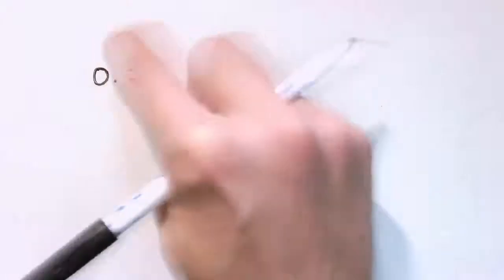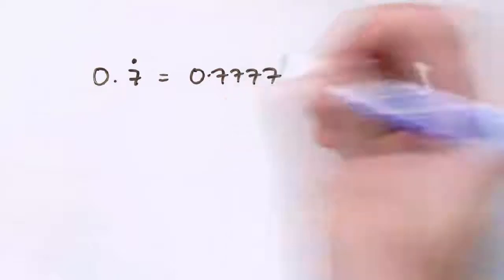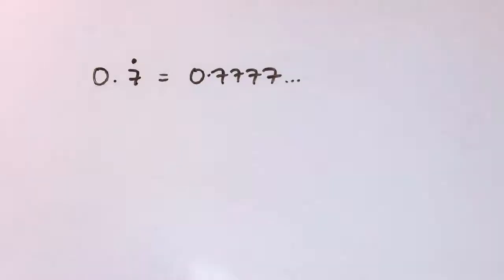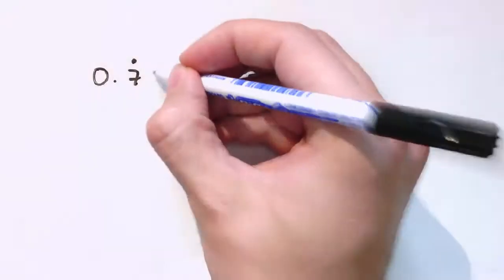Let's start with a simple one like 0.7 recurring, and the method that we'll generalize nicely to other examples is to take this number and write it out as 0.7777... and this number I'm going to call x.